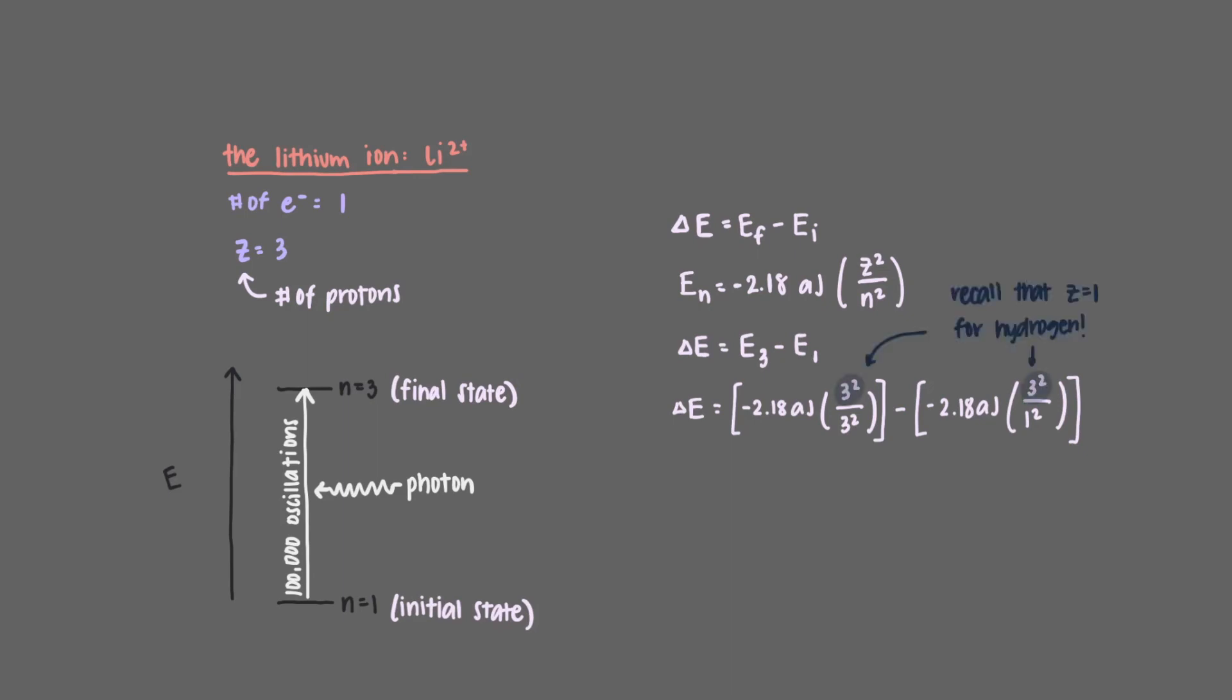This is the only difference between this problem with lithium 2 plus and the hydrogen atom. Solving, we compute an energy change of 17.44 attojoules, so the photon energy of the light must be 17.44 attojoules.